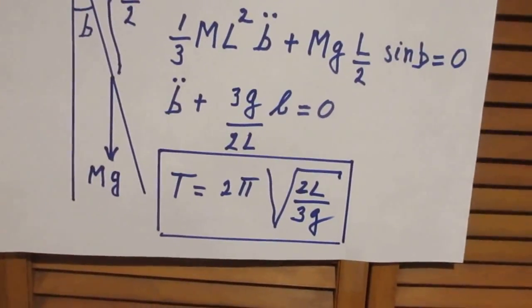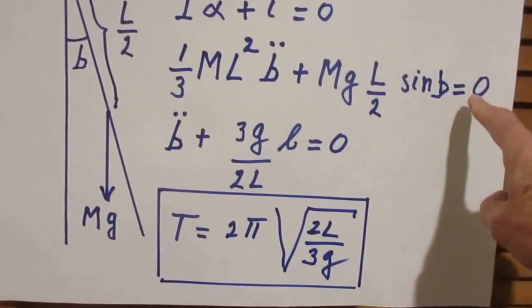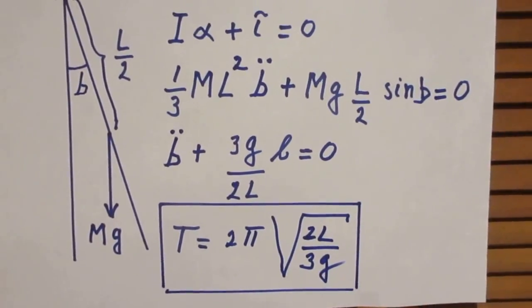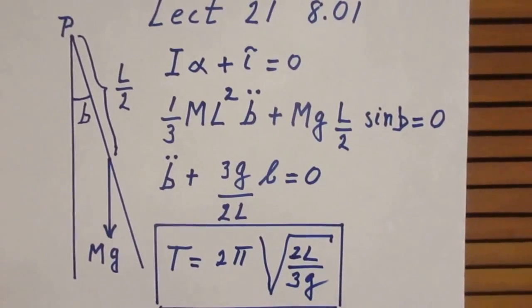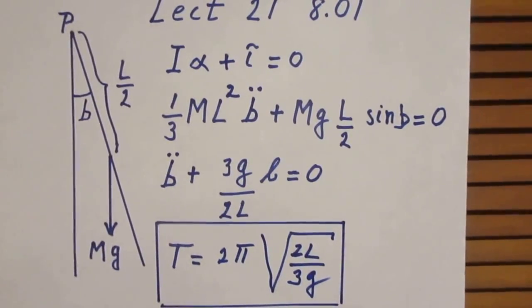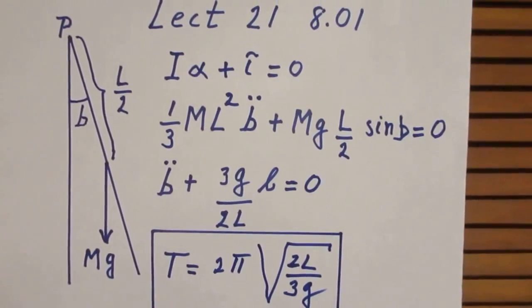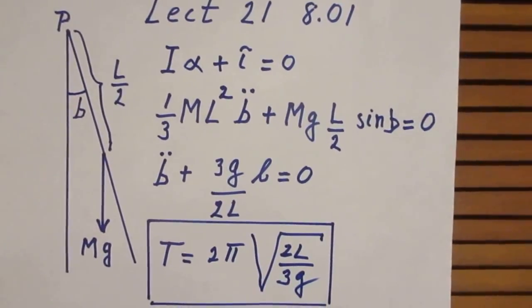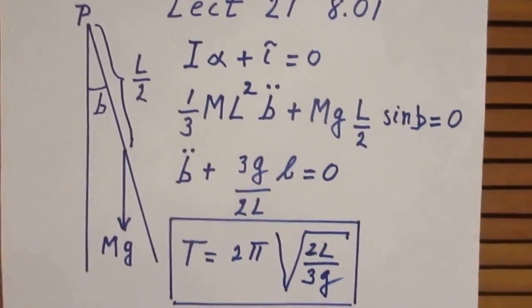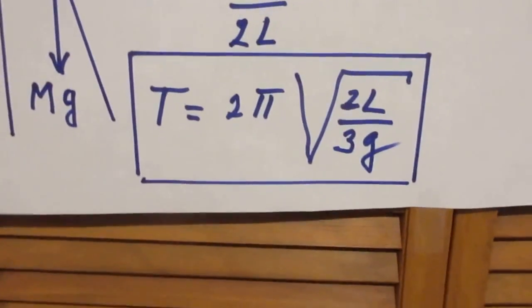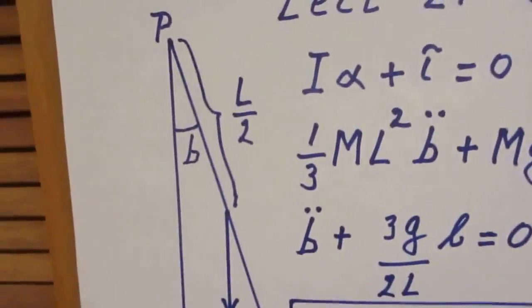Small angle approximation, so that the sine of B can be replaced by B. If the angle is small, then the sine of the angle is very closely the same as the angle in radians. Try this—try five degrees, try ten degrees. And we found finally that this was the period of oscillation about that point P here.